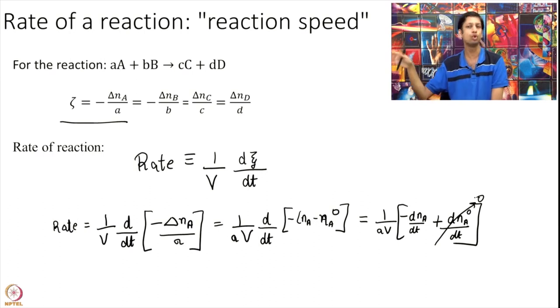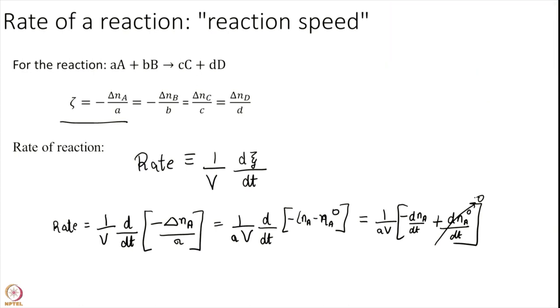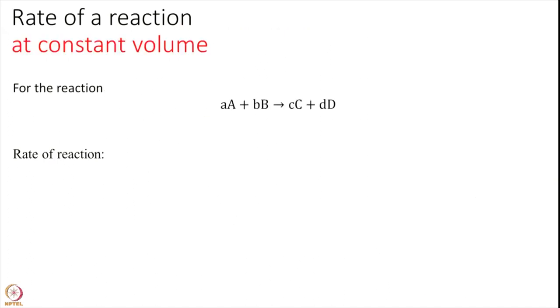What you notice that this is 0 because N A naught is not a function of time. It is simply the number of moles at initial time. That was just a number. So the actual change is N A. So this is 0. So at the end I get 1 over volume into 1 over a minus d N A by d T.